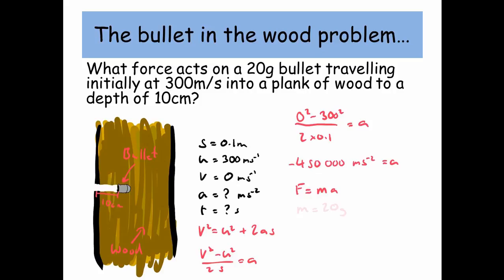So we're going to use F equals ma. Problem is our mass is 20 grams. We need to convert that into kilograms, so we divide by 1000 which gives us 0.02 kilograms.